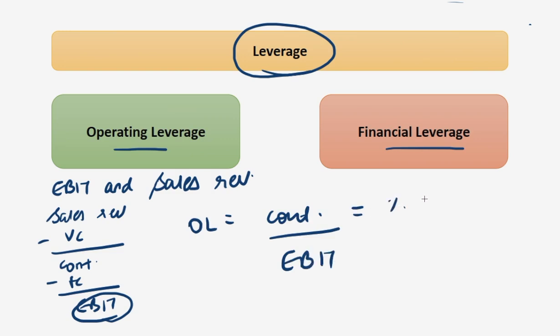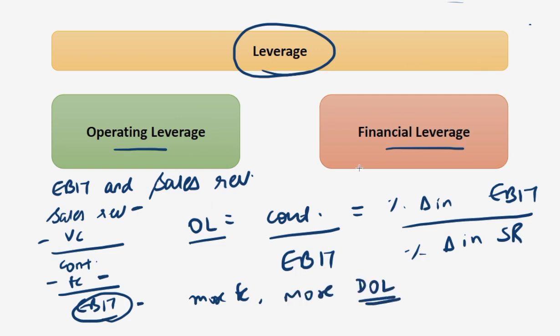It is also denoted as percentage change in the dependent variable, and here the dependent variable is EBIT, upon percentage change in sales revenue. Operating leverage says that with a change in sales revenue, what will be the effect on the EBIT level. More the fixed cost, more will be your degree of operating leverage. If fixed cost rises, EBIT will decline and the denominator will decline, which means the degree of operating leverage will increase.